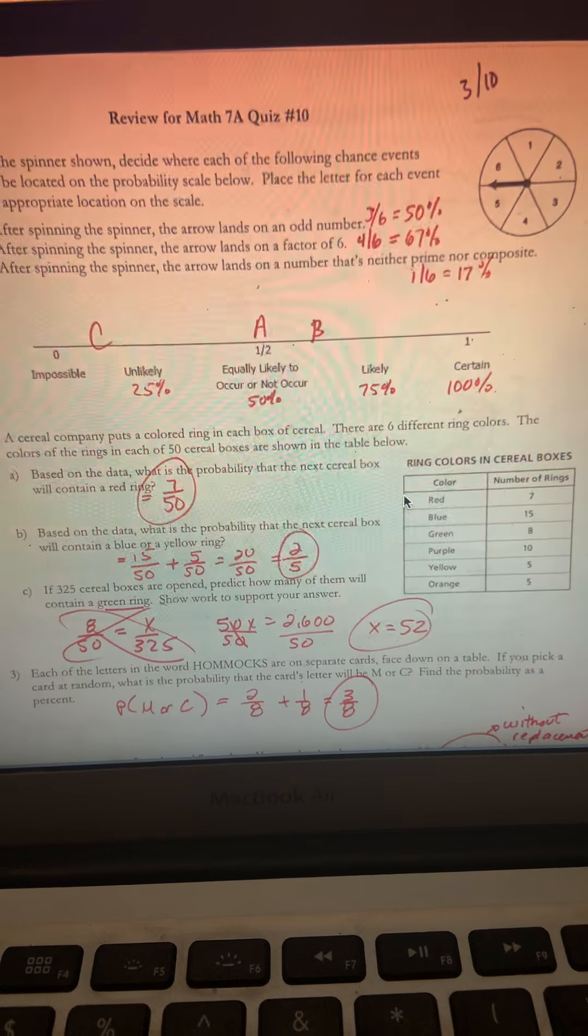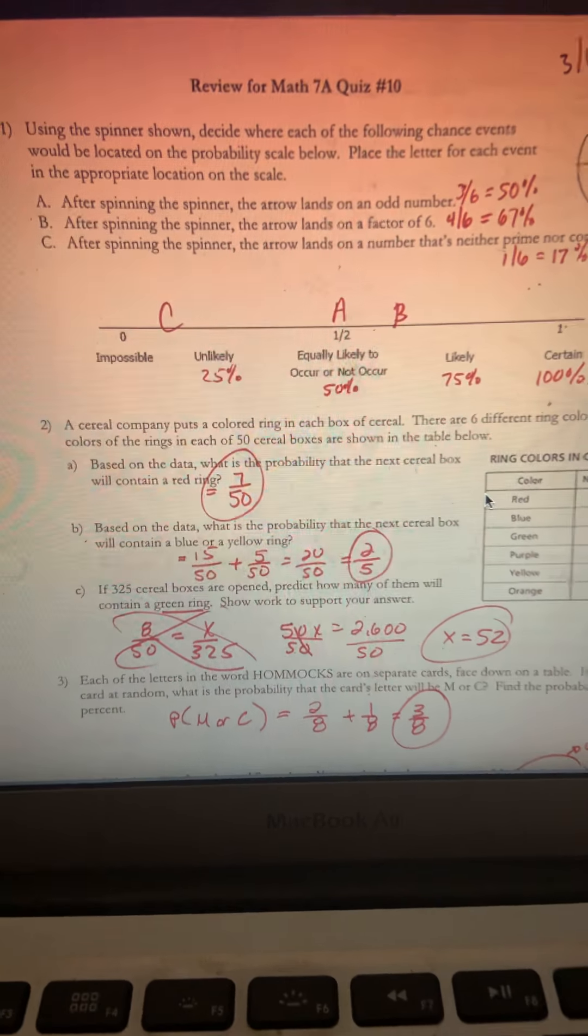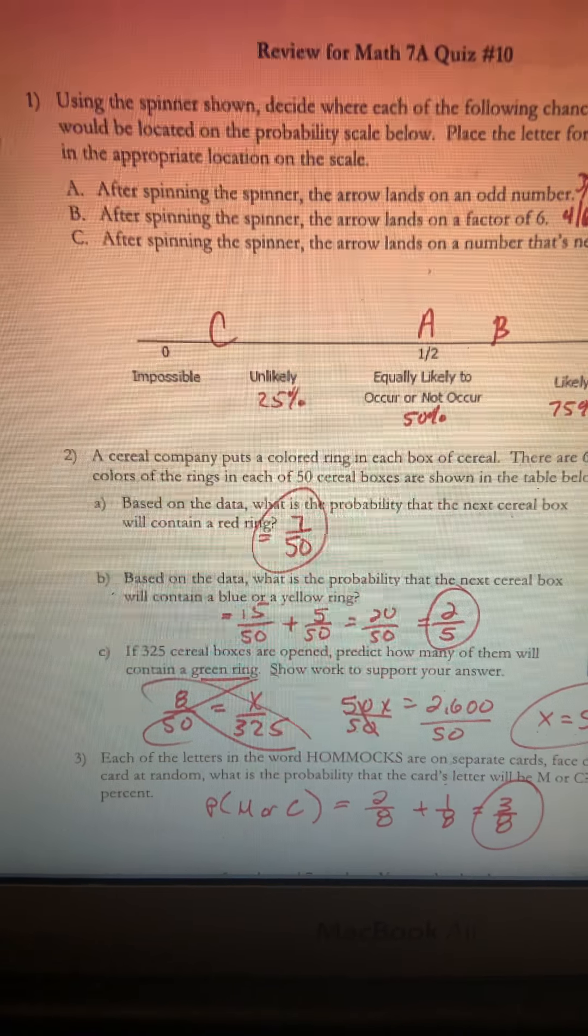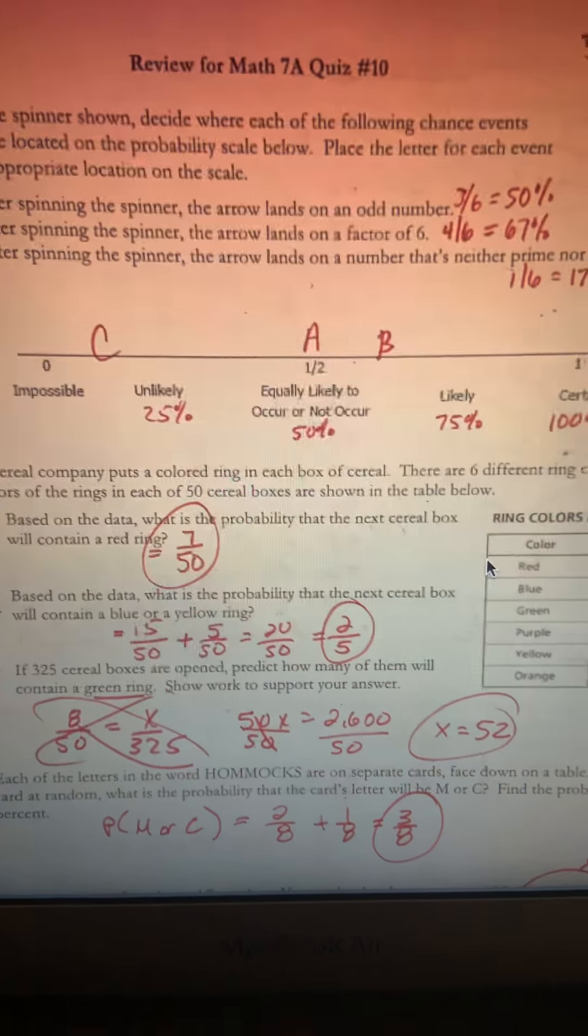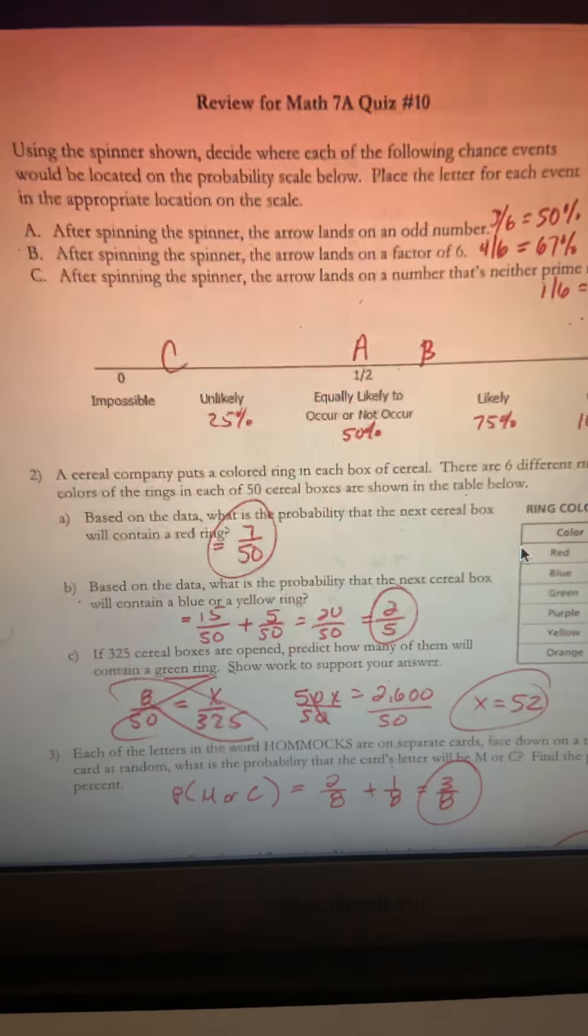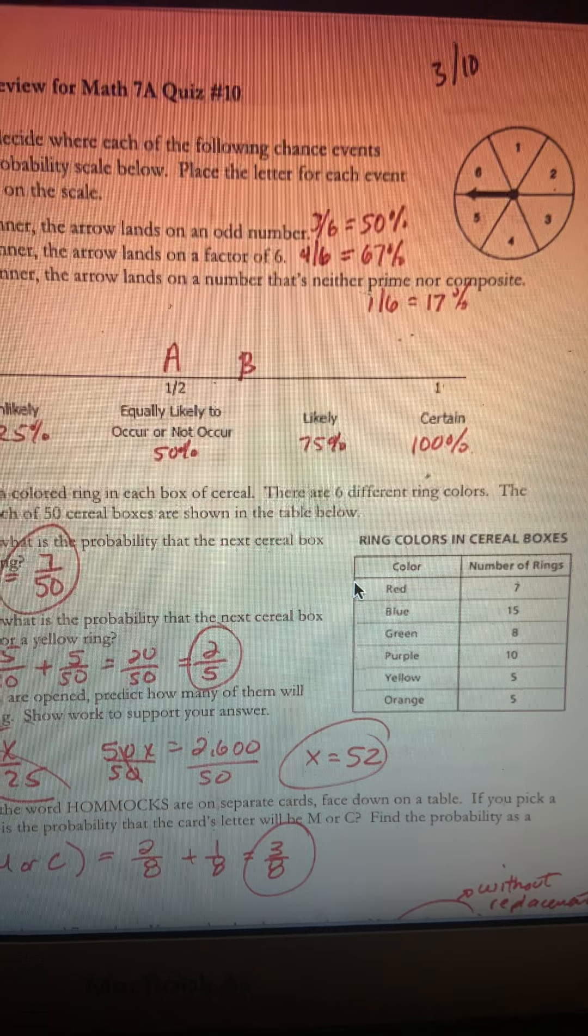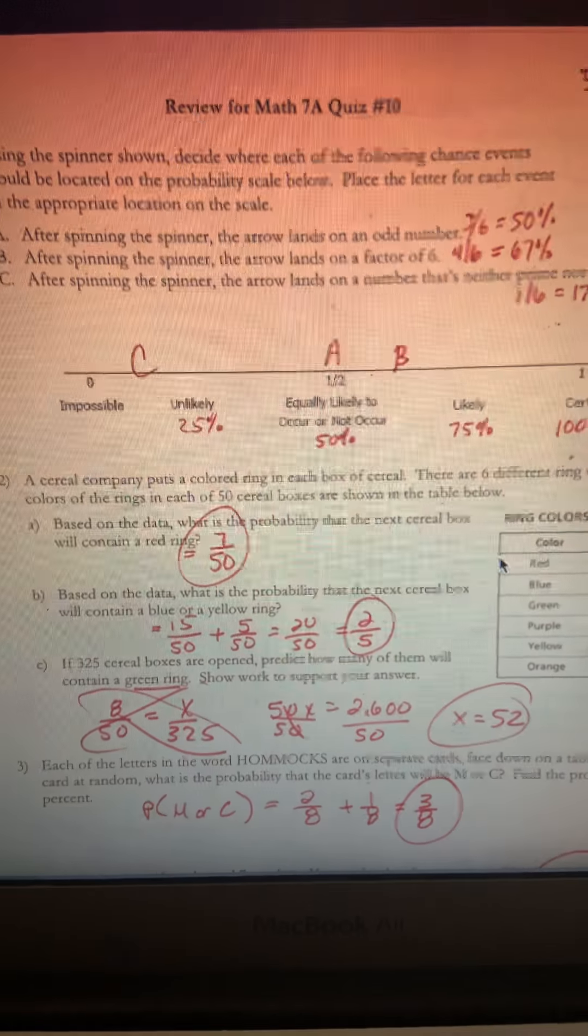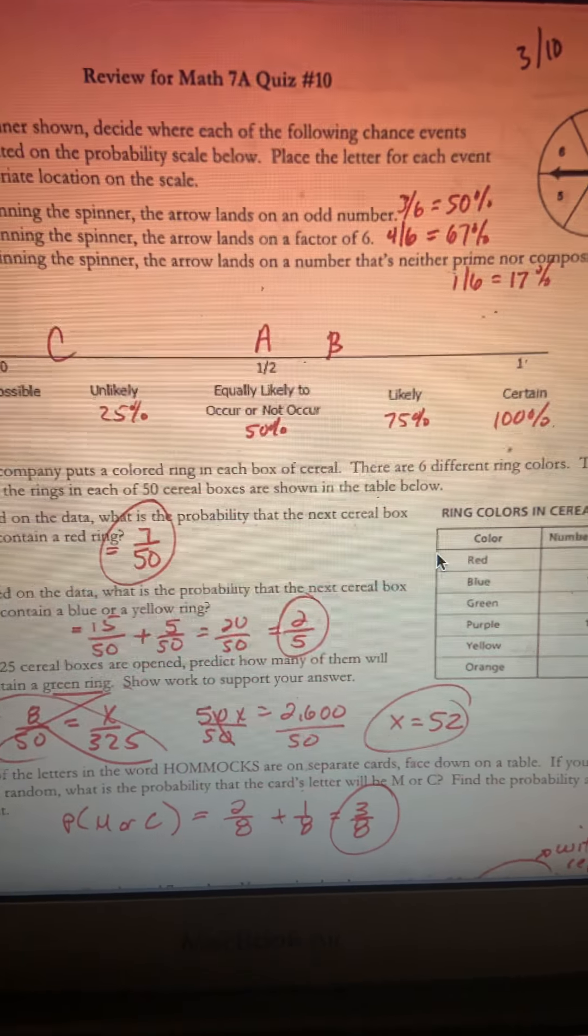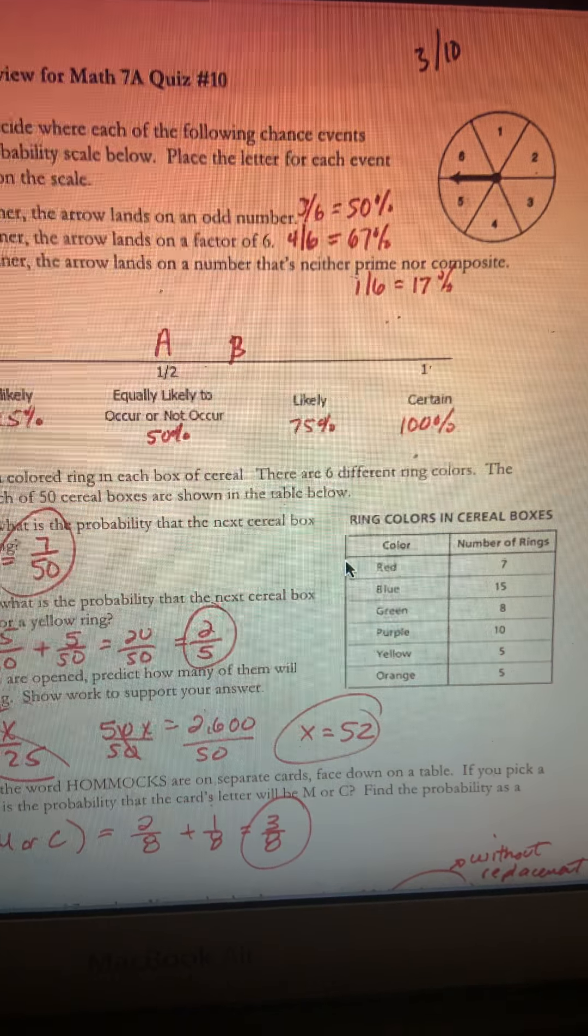Here are the answers to number one. I'm going to zoom in to each question. The odds of landing on an odd number is three out of six. The odds of landing on a factor of six is four out of six or 67 percent. The odds of landing on a number that's neither prime nor composite is one out of six or 17 percent.